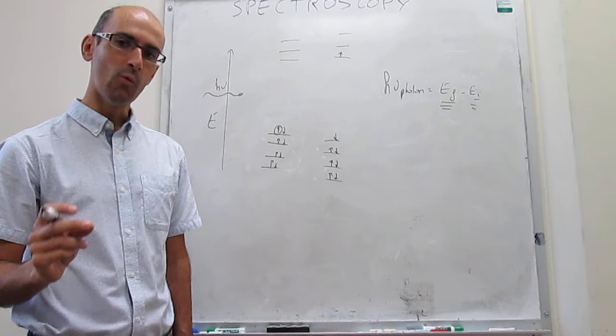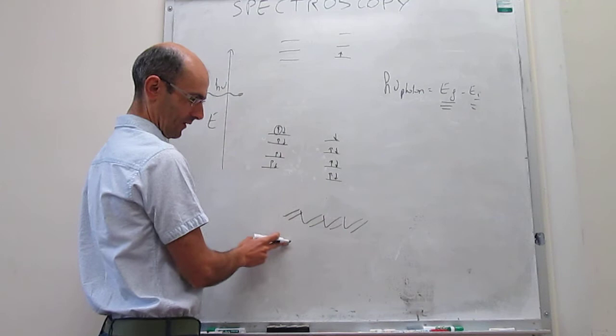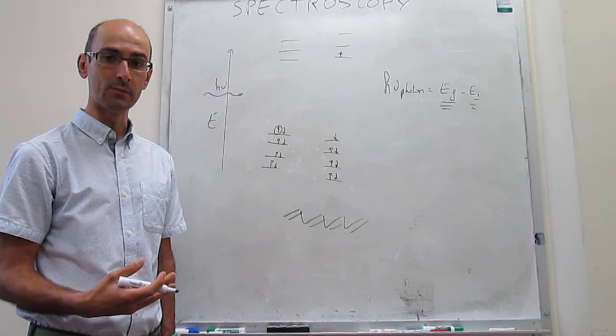One example is electrons in polyene molecules, molecules that are like this. The pi electrons in these molecules can be well captured by the particle in a 1D box model.